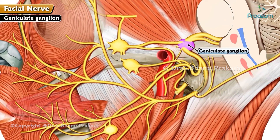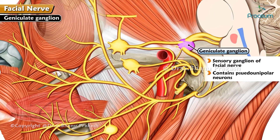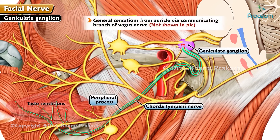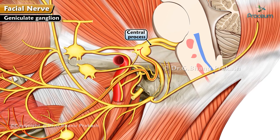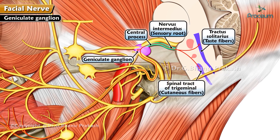Geniculate ganglion: it is the sensory ganglion of the facial nerve, present at the external genu of the facial nerve, and contains pseudounipolar neurons. The peripheral process receives taste sensations via the chorda tympani nerve branch of the facial nerve and general sensations from the auricle via the communicating branch of the vagus nerve. The central process from the ganglion conveys impulses via the nervous intermedius — the sensory root — which terminates in the tractus solitaris for taste fibers, and in the spinal tract of the trigeminal for cutaneous fibers.